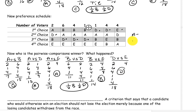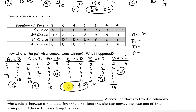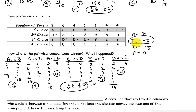Now tally up the points. Candidate A has won two of their pairings. Candidate B has won two and a half. And candidate D has won one and a half. Candidate E didn't win any of their pairings. So the candidate with the most points is candidate B, and so B wins.